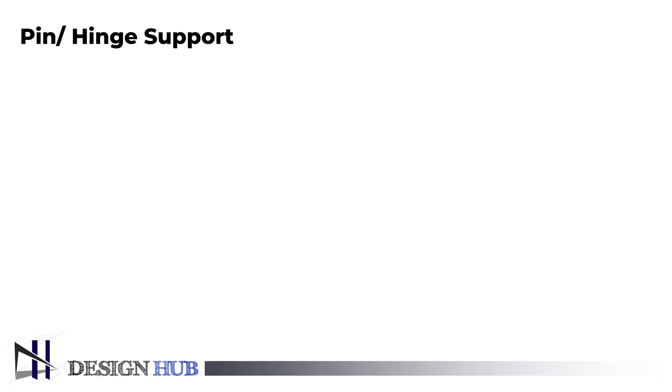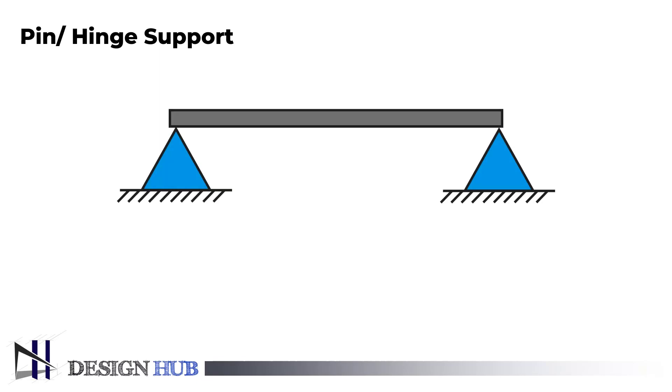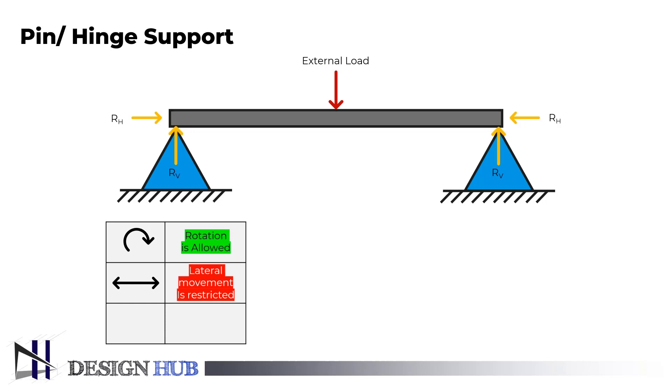Pin support is the next step. Pin support is fixed at the bottom and one can attach necessary members at top as it is hinged. The support surface can be fixed to a horizontal, vertical, or sloping surface of any angle. Only rotation is permitted by this type of support, and both horizontal and vertical moments are constrained.